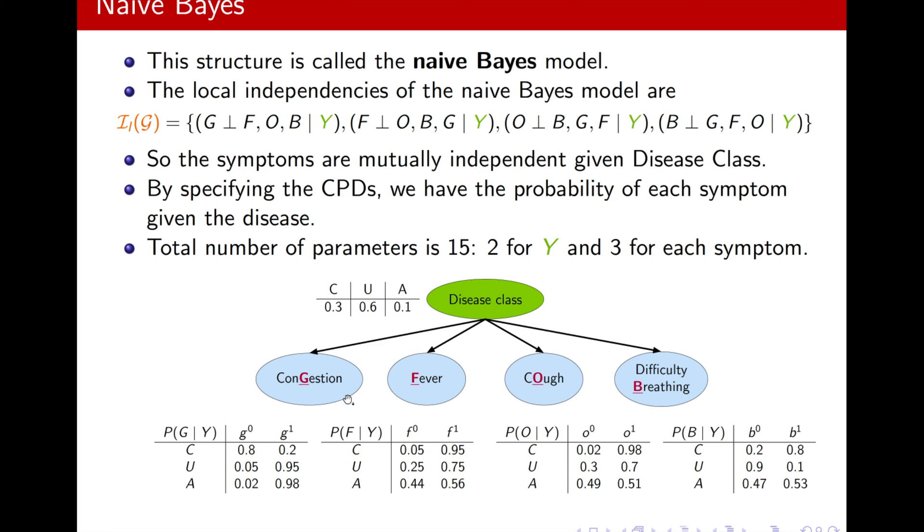Now, you can see how many variables, how many parameters I need. For the disease class, I only need two. They add up to one. For each of these symptoms, I only need three, because they have a parent with three variables, and they are binary. So two minus one times three, which is three. We see that each row adds up to one. So I will have all these, and I have my full Bayesian network.